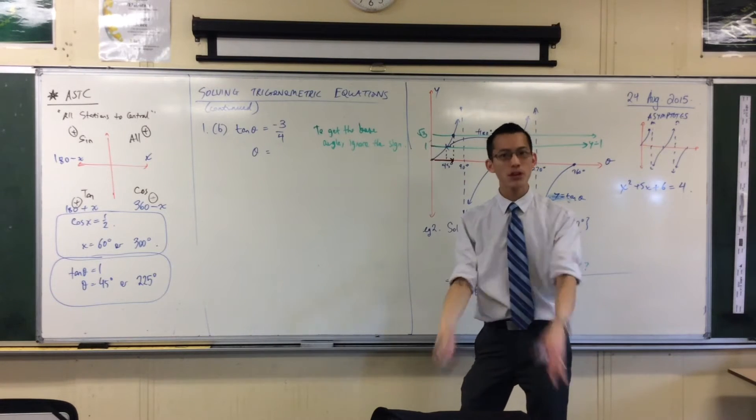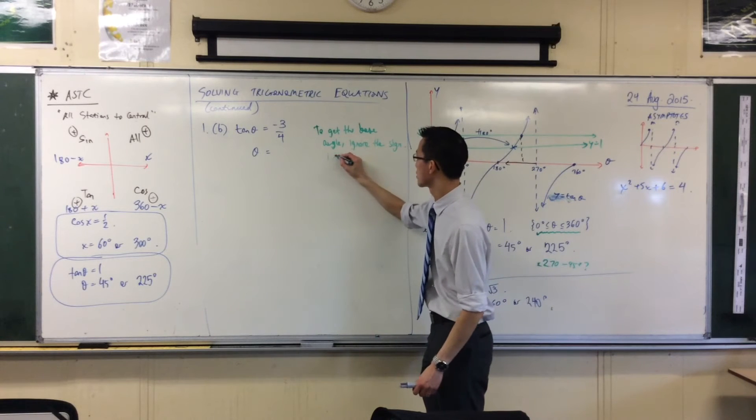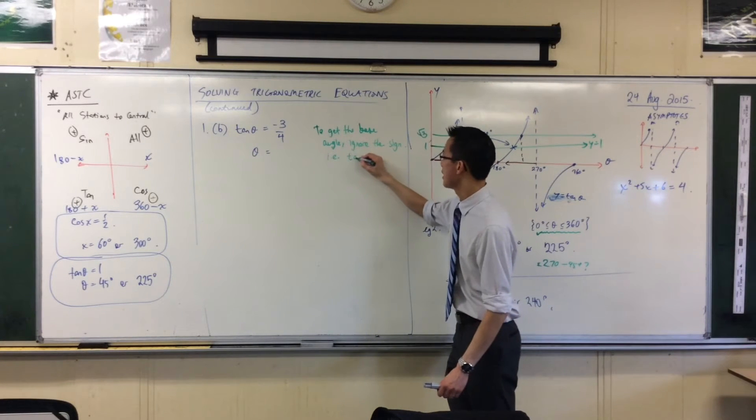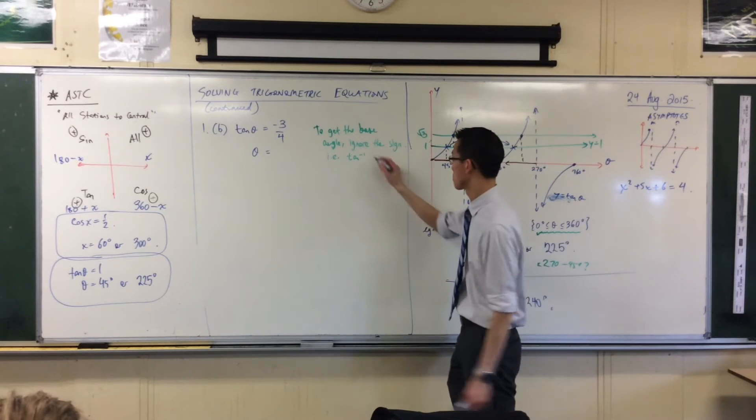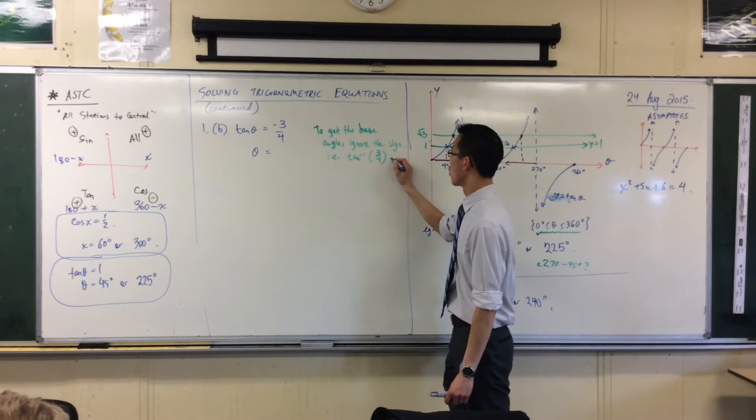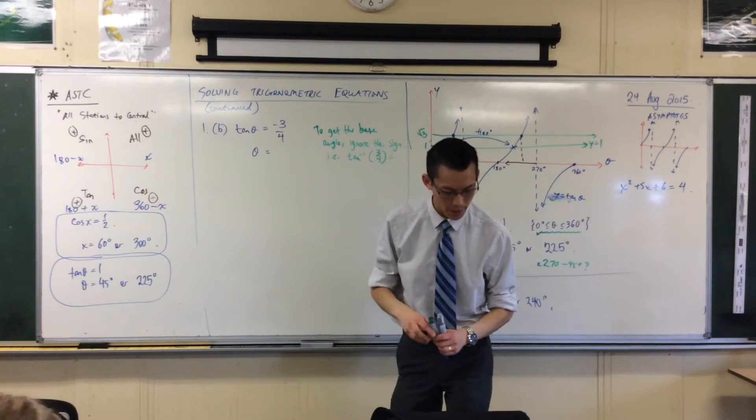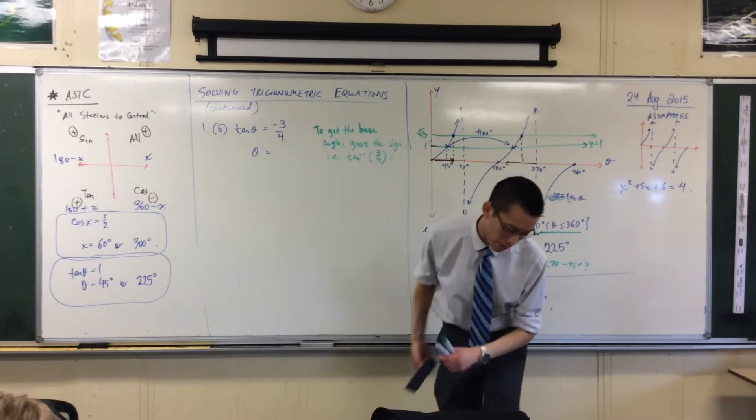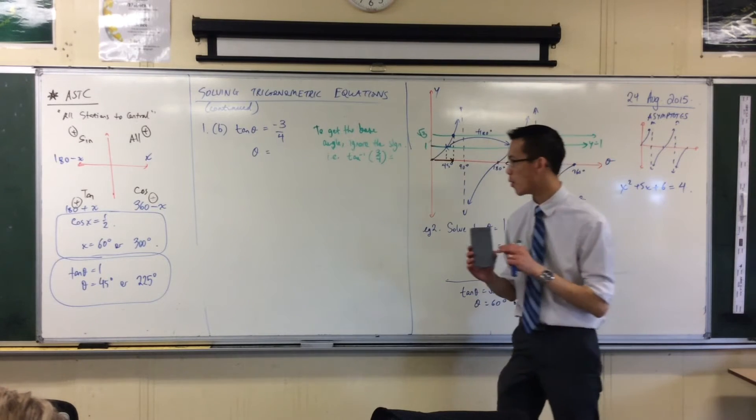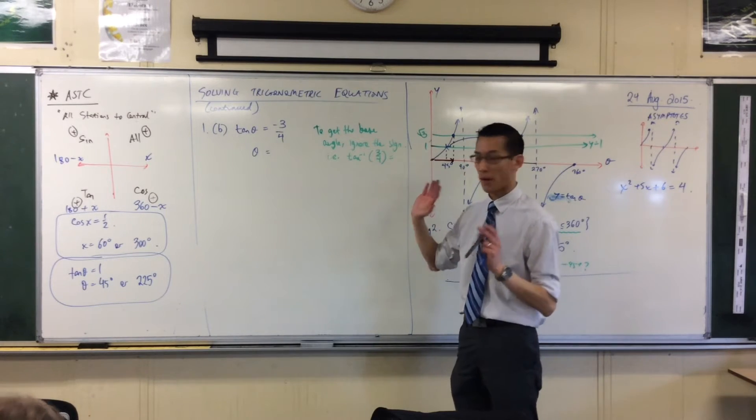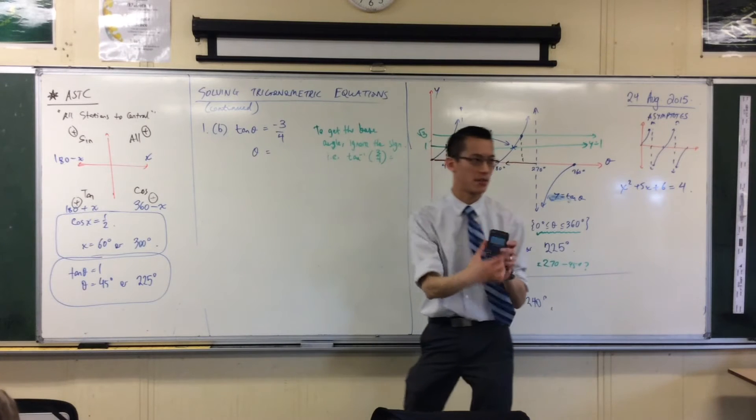So, in other words, what you're going to put into your calculator is tan inverse, not of negative 3 quarters, but just 3 quarters. Tan inverse of 3 quarters. Now, just for the purposes of keeping this nice and simple, in fact, I think it's what they ask, let's just do this to the nearest degree. Don't worry about decimals or minutes or anything like that. We want to focus on the technique rather than the size of the angle.